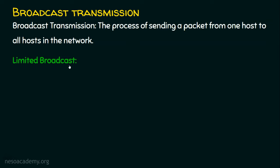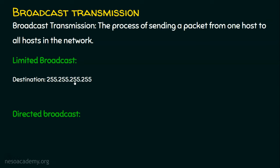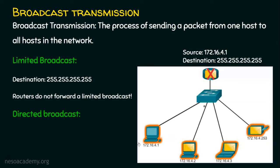In a limited broadcast, the destination IP address will be 255.255.255.255. When a computer sends this broadcast, everyone in the local area network will be receiving it, including the default gateway — that is, the router. But the router will not forward this broadcast anymore. The routers do not forward a limited broadcast. In this example, the source computer 172.16.4.1 uses the destination IP address 255.255.255.255. When this computer sends a broadcast, everyone in the network will receive it. Even the router will receive it, but the router will not forward this broadcast anymore. This is the limited broadcast.